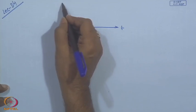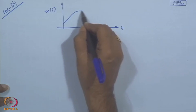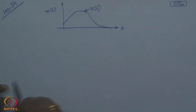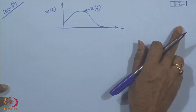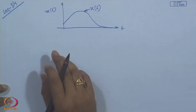Last class we discussed about signal size. Suppose we have a signal T in this direction and x of t in this direction. Suppose the signal is like this - this is x of t. This signal tends to 0 as t tends to infinity. So in that situation, the size of the signal is measured by the energy content in that signal. We have seen how to find out the energy content in the signal.